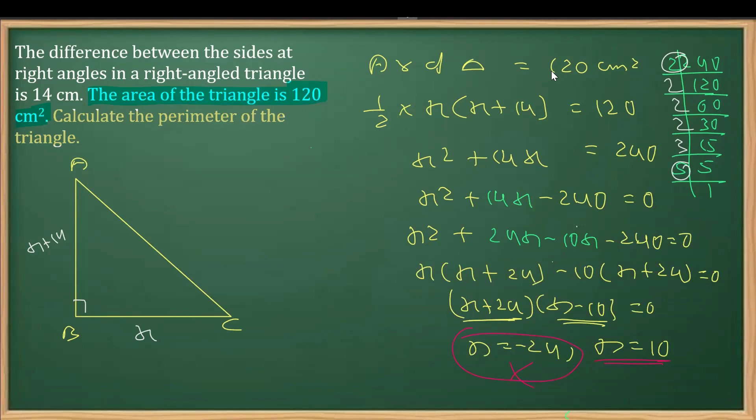Check here, we can say that we have AB, which was x, so x comes out to be 10. And then AB is x plus 10, so it is 10 plus 14 is 24. And BC is x, so that means BC will give you 10 only. Now in order to find the perimeter, first we need to find the hypotenuse.